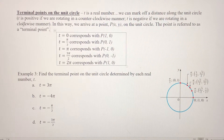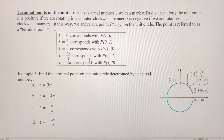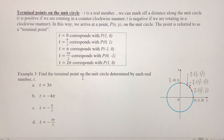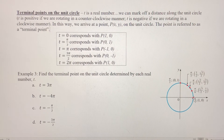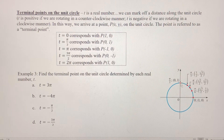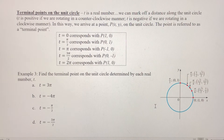In this video, we're going to talk about terminal points along the unit circle, and we're going to be very specific with the values we use to determine the terminal points. We're going to stick with values for T which are on the axes — either the x-axis, positive side or negative side, or on the y-axis, positive side or negative side.